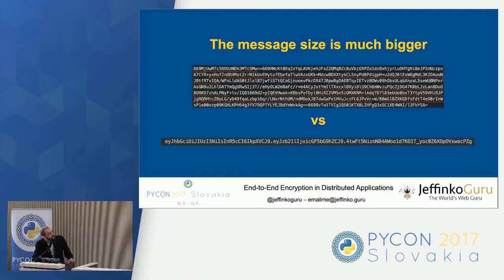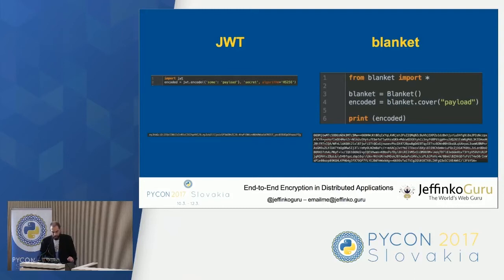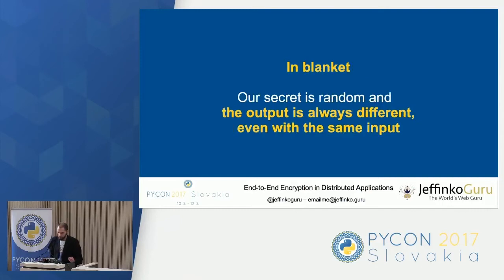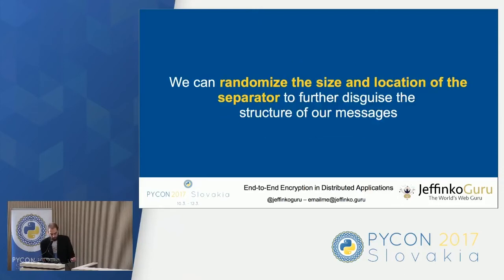One of the problems is also that the message is much bigger. Using a data package comparison: at the bottom is JSON web tokens and at the top is Blanket — Blanket uses quite a large data load. The difference is that with JSON web tokens you're providing your payload and also your secret, while with Blanket you are just providing your payload — nothing else is provided. Everything else is completely random. Even with a generated secret, parts of the JWT message structure remain the same: the period separating the header, the payload, and the signature. With Blanket, everything is completely random no matter what you keep consistent.